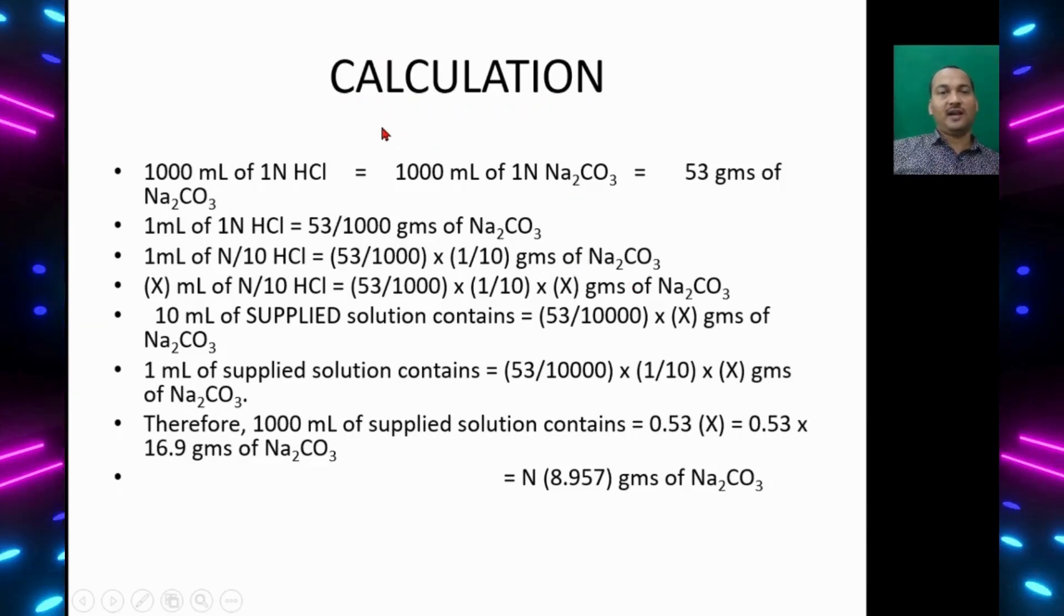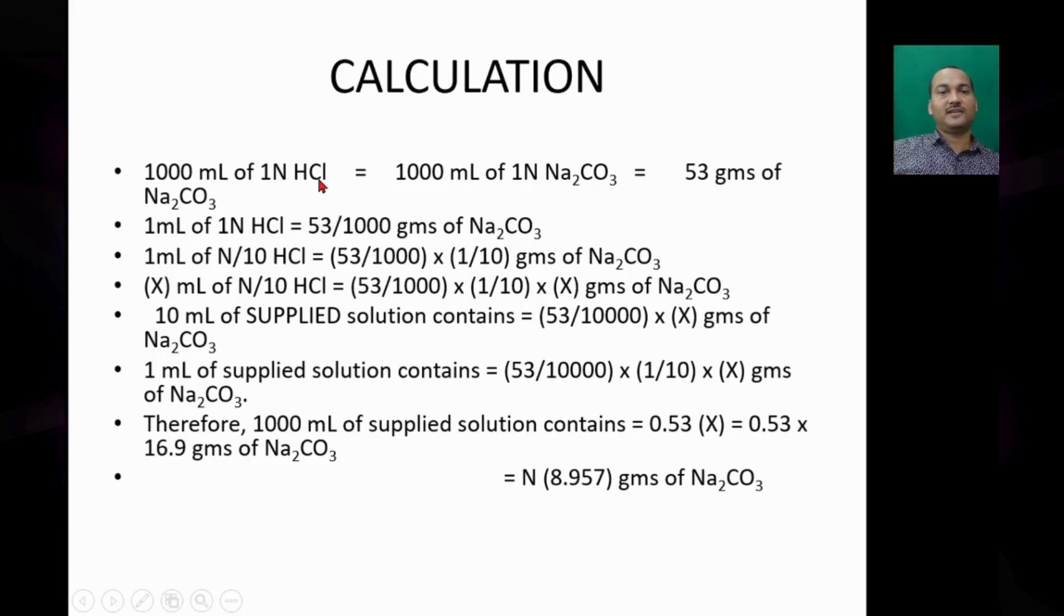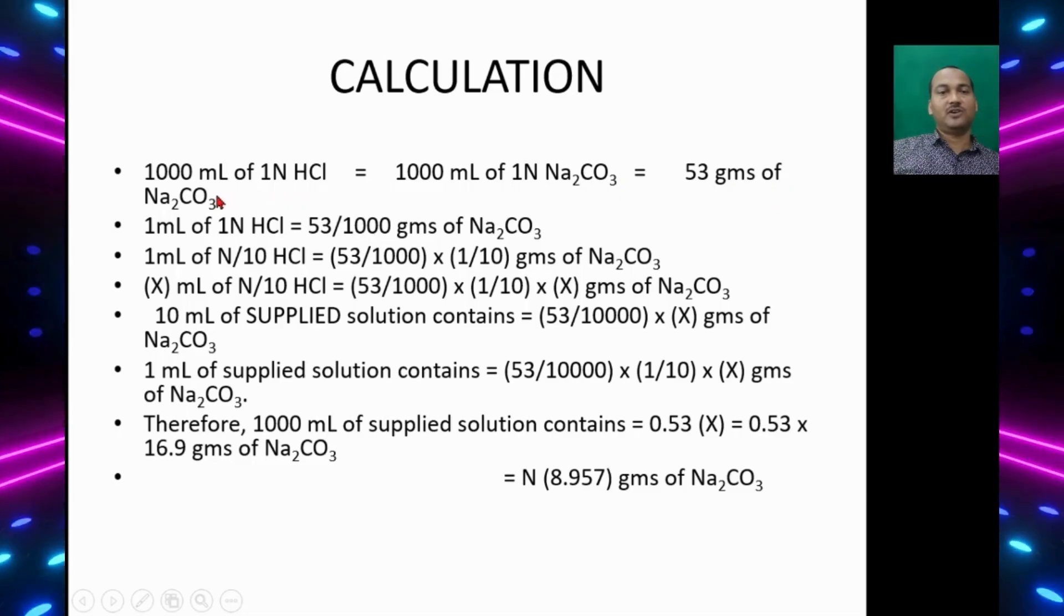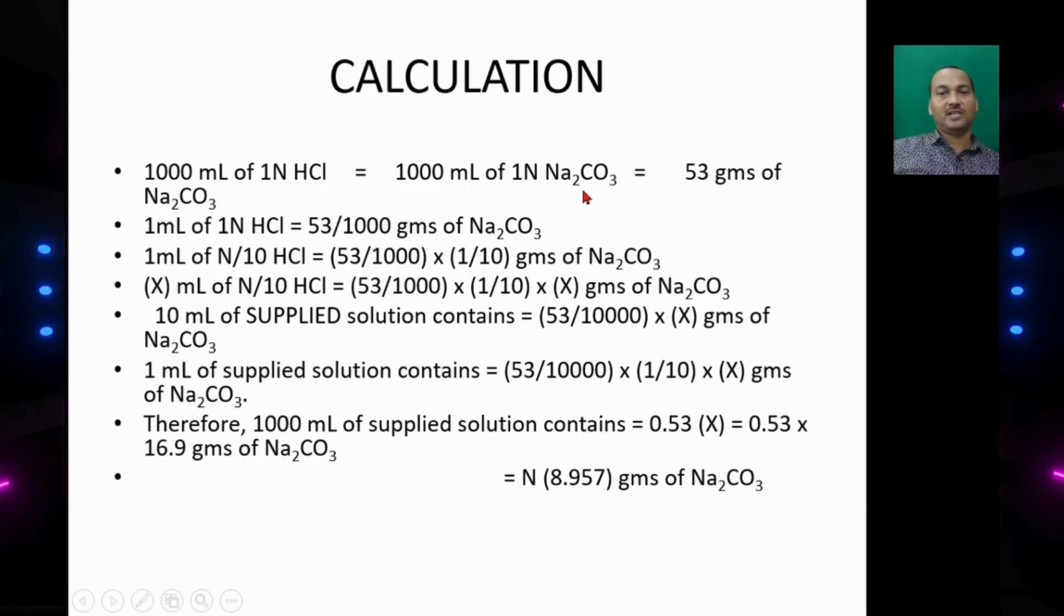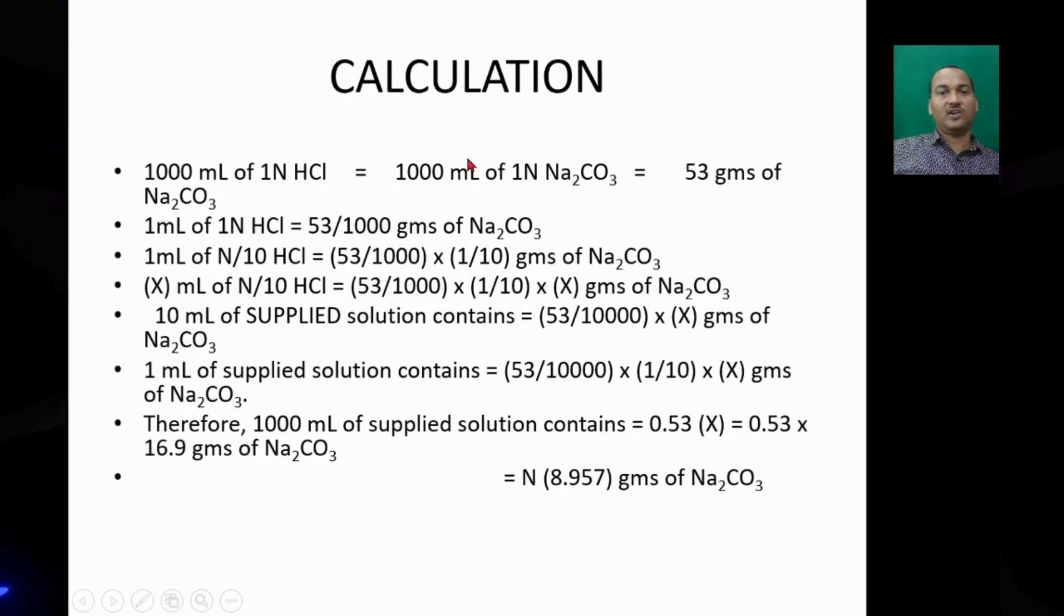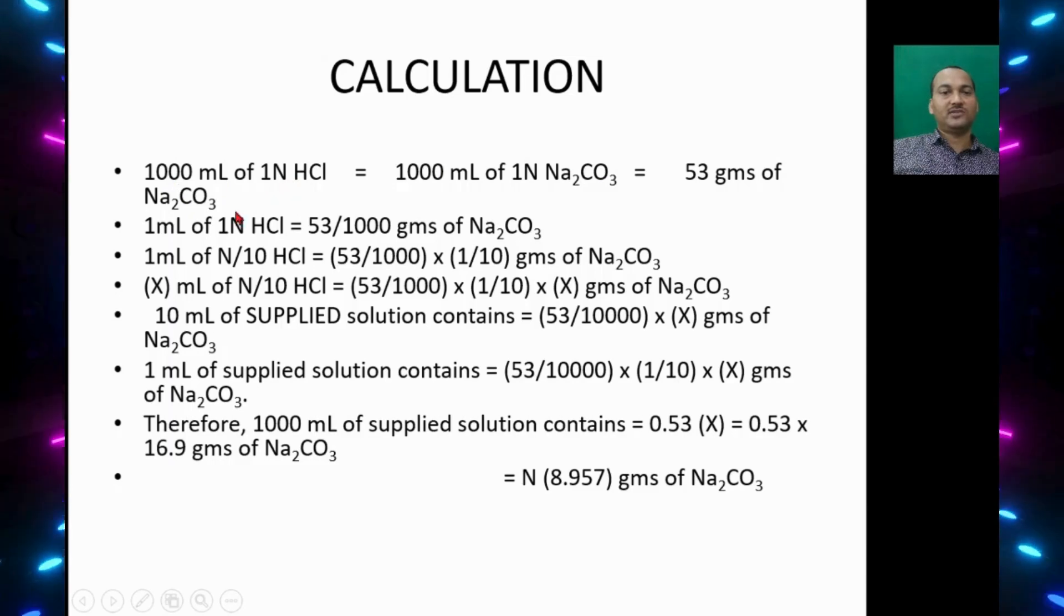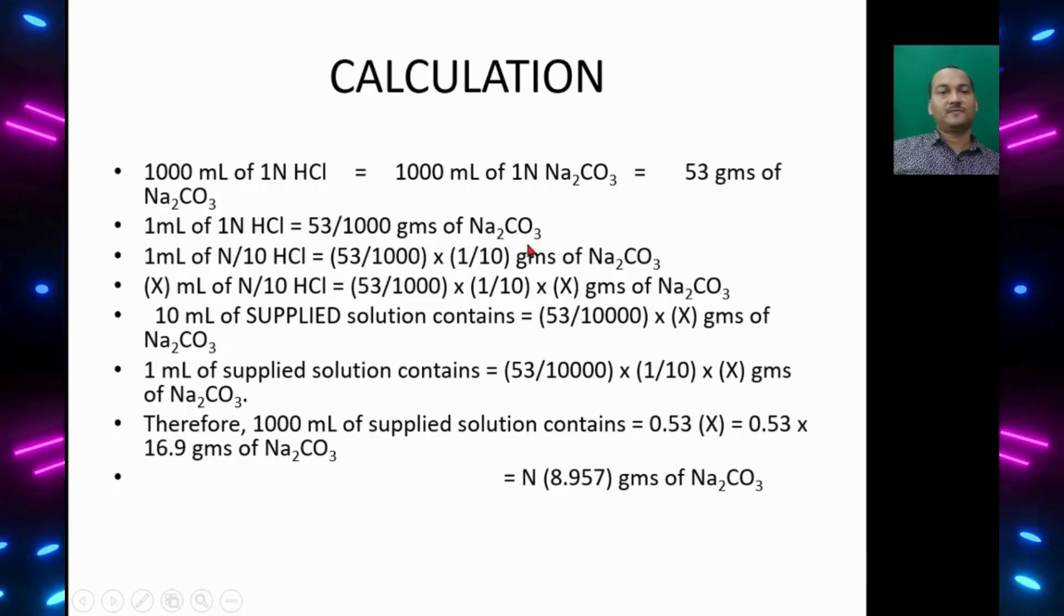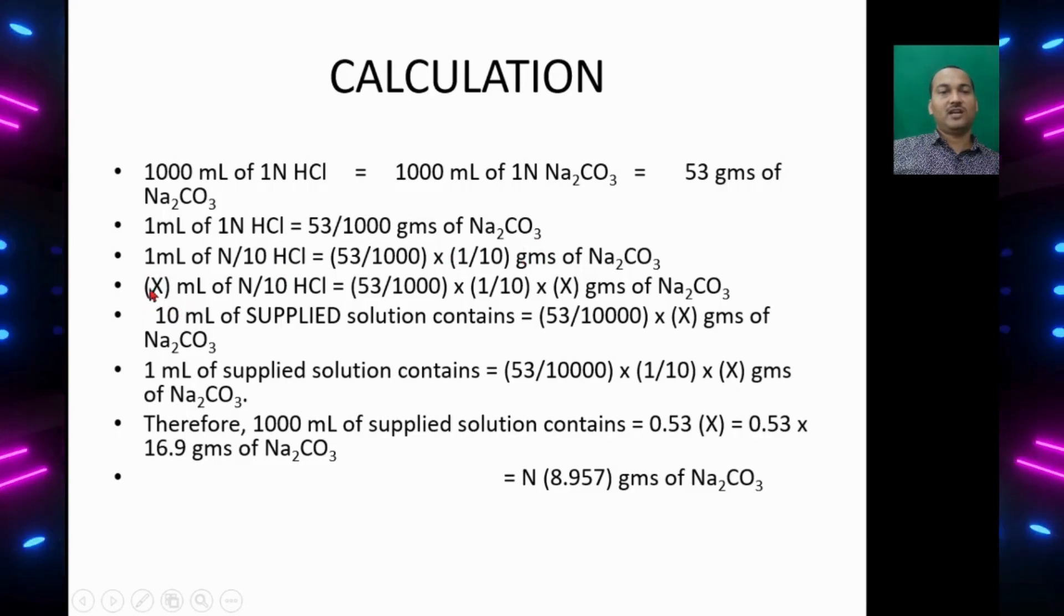In another way we can find out the amount of sodium carbonate present in the supplied solution. Use this basic equation: 1000 ml of 1N HCl equals 1000 ml of 1N Na2CO3, which equals 53 grams of Na2CO3. This is the equivalent weight of sodium carbonate. If we dissolve 53 grams in 1 liter of solution we get 1 normal sodium carbonate solution. Using this equation, 1 ml of 1N HCl equals 53 by 1000 grams of Na2CO3. 1 ml of N by 10 HCl equals 53 by 1000 grams of Na2CO3. From titration we consumed 16.9 ml.